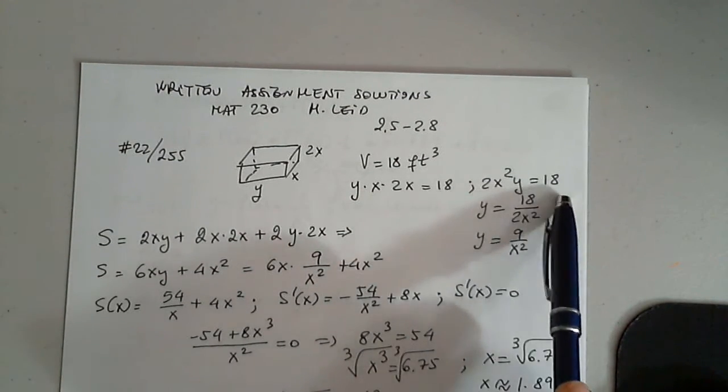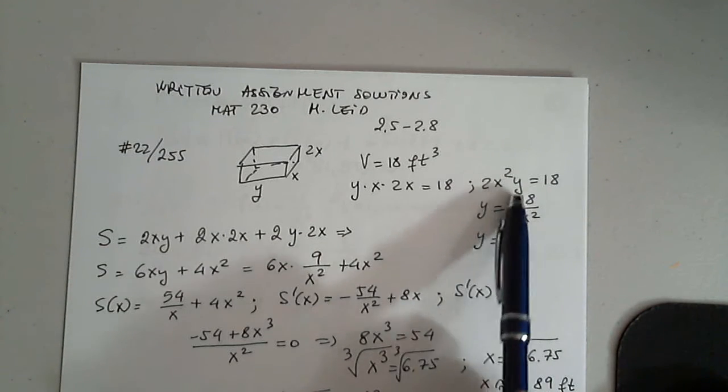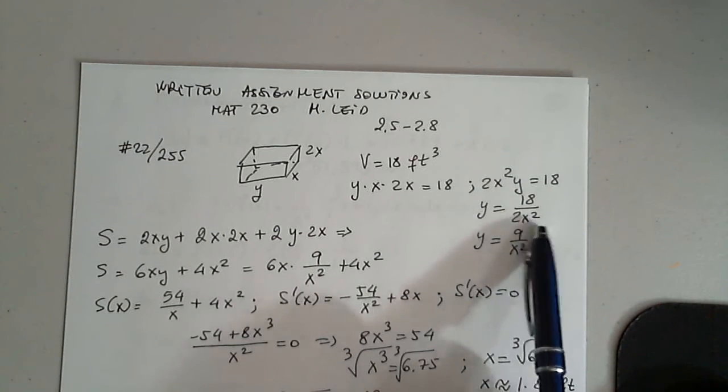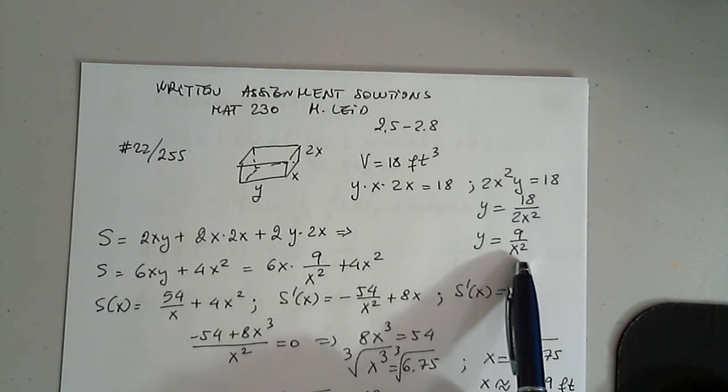We multiply, we get 2x squared y equals 18, and we solve for y. And we simplify 18 over 2x squared into 9 over x squared.